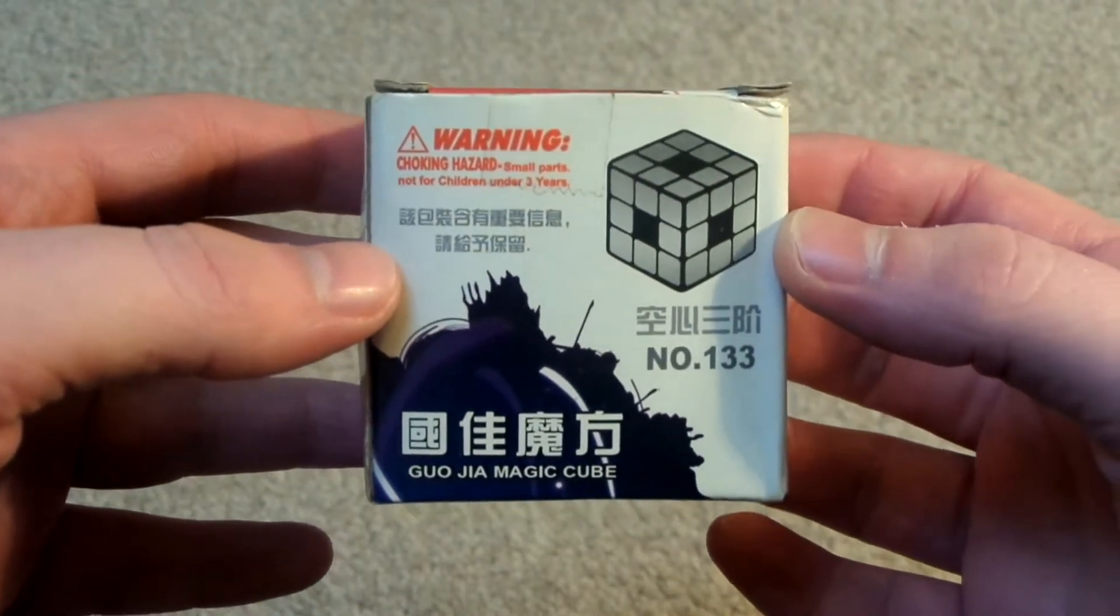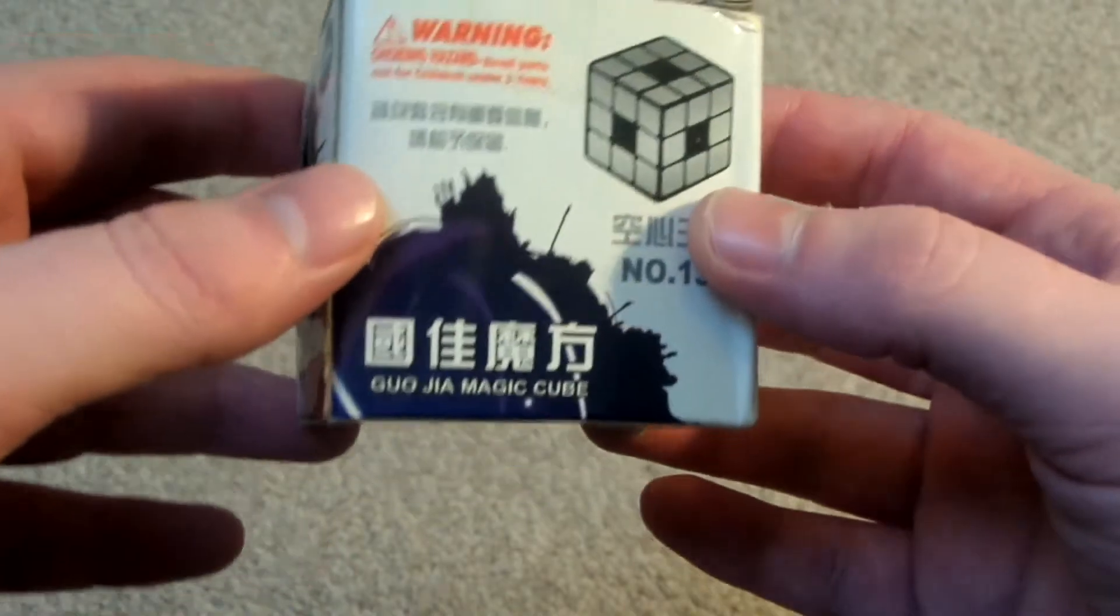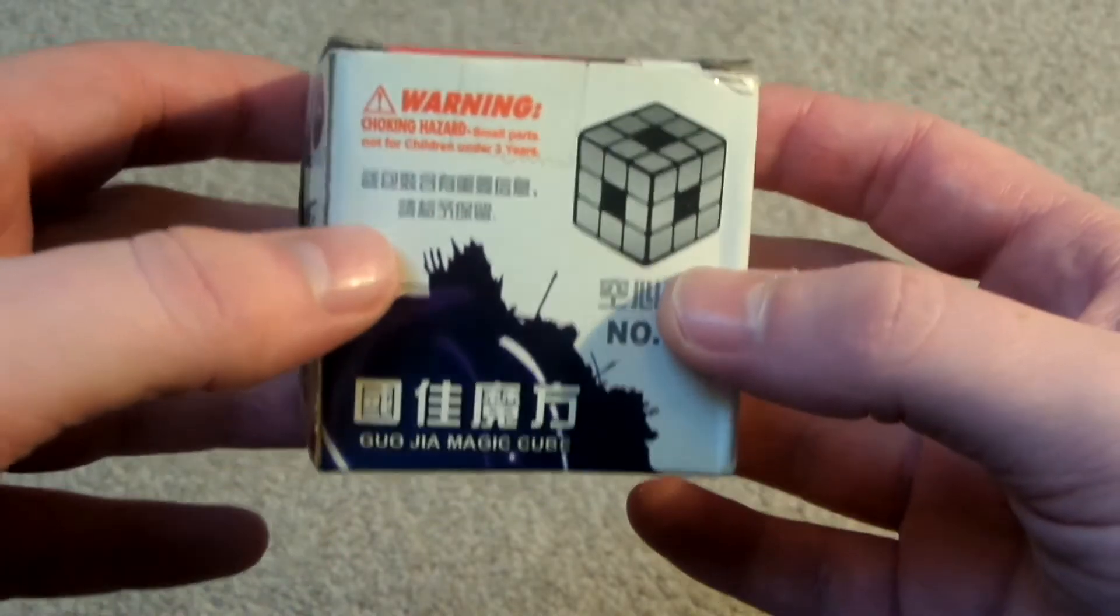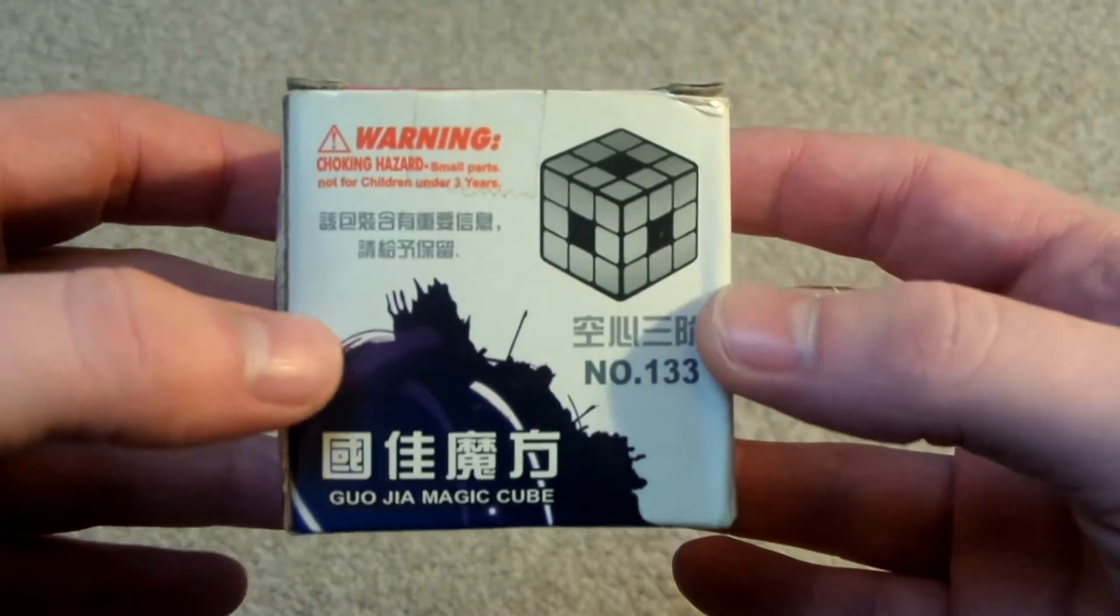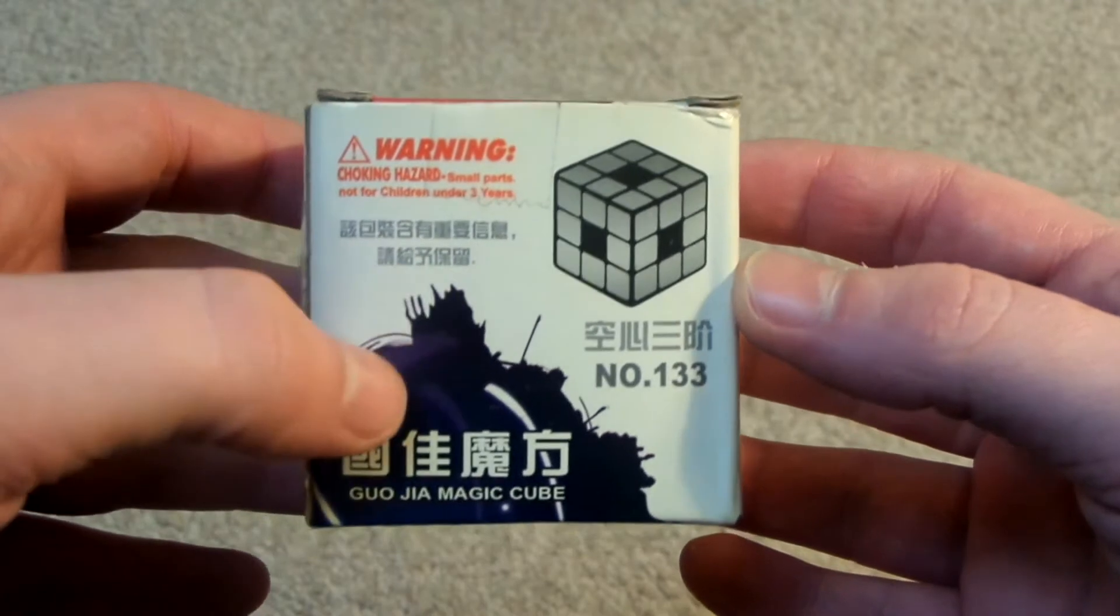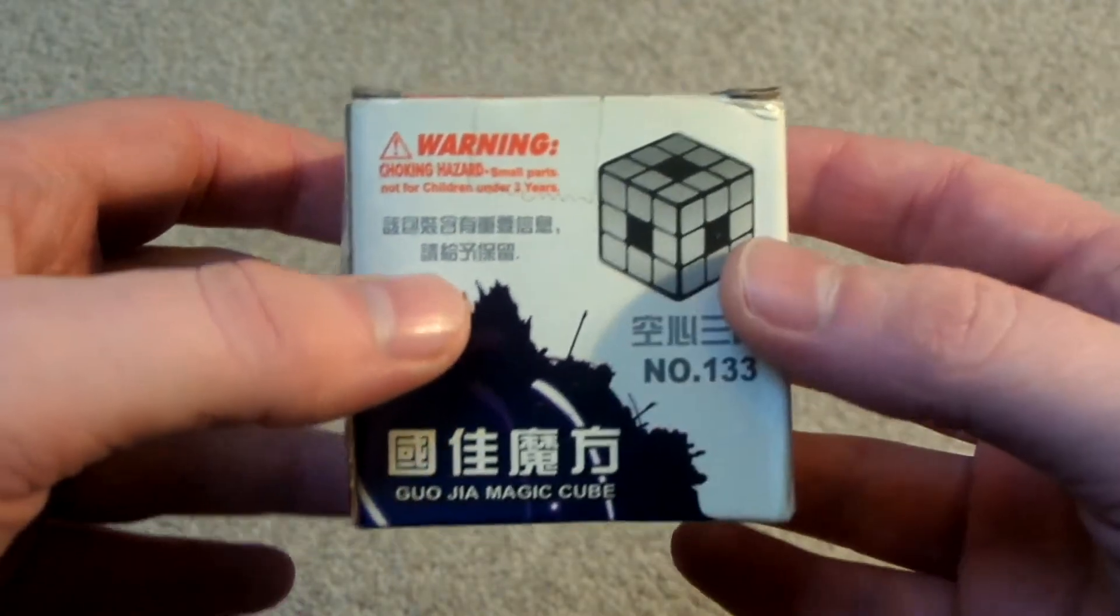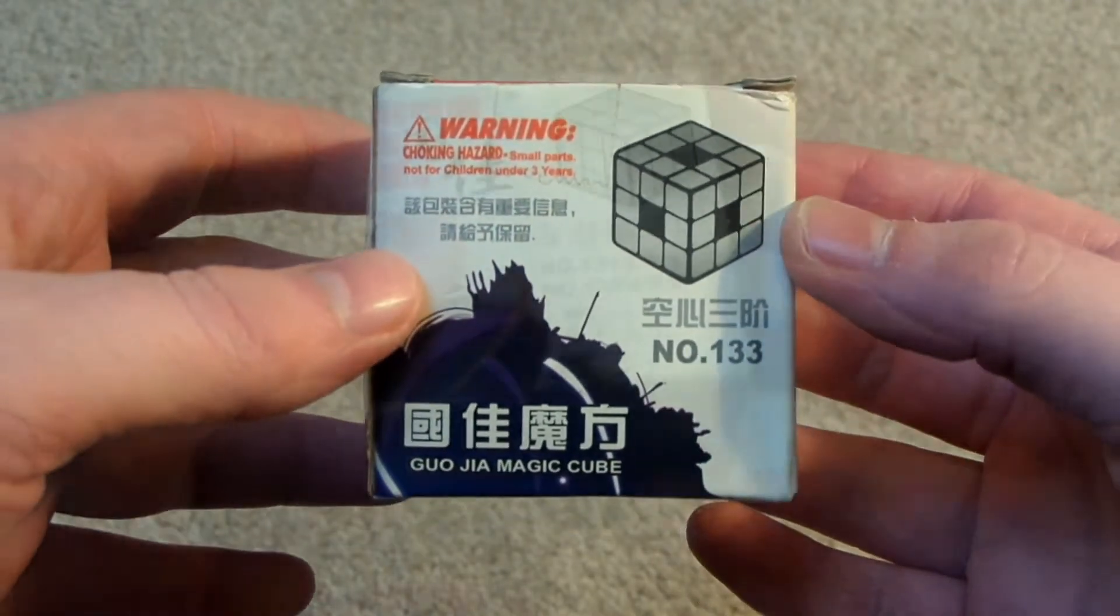Warning, choking hazard, small parts, and I can't read it from there. Well, I can't read it through the viewfinder anyway. Not for children under three years. I've got no idea what this Chinese writing says, but if anyone can read Chinese, just let me know in the comments section.